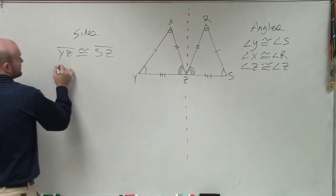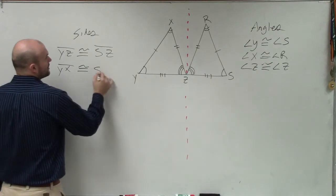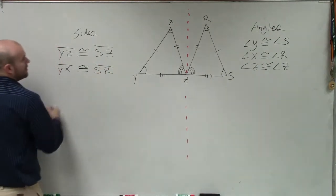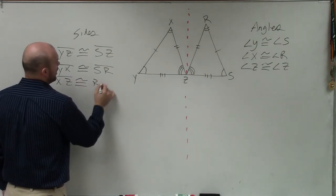Then I can just go with line yx is congruent to line sr. And xz is congruent to line rz.